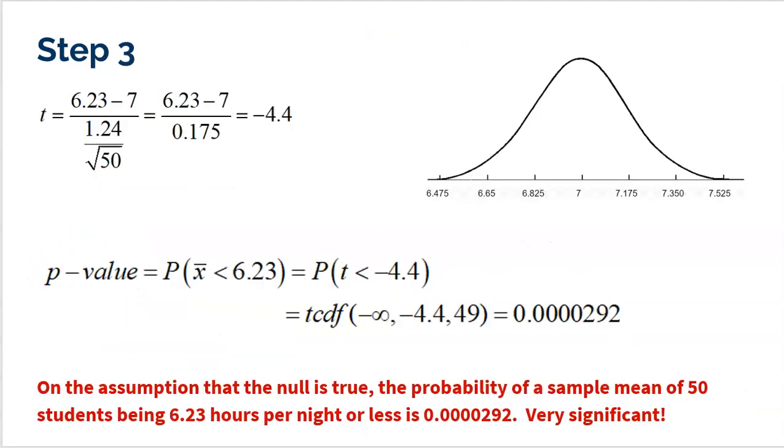So to prove that, we need a t-score. So we're going to take the 6.23 minus the null, which was 7, and we are going to divide that by the standard error, which was 0.175. And we got a t-score of negative 4.4.